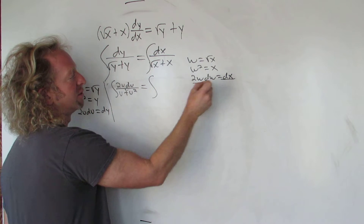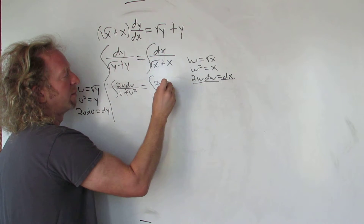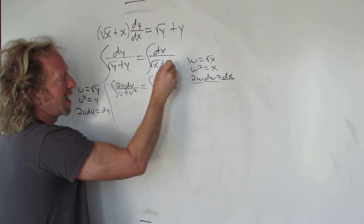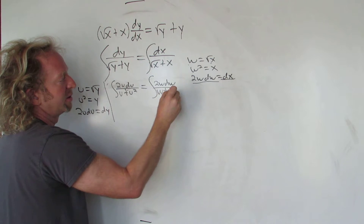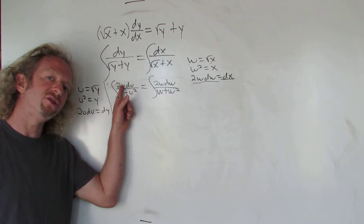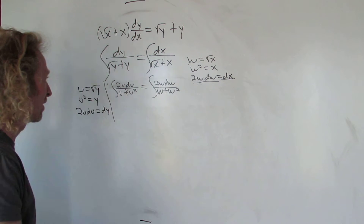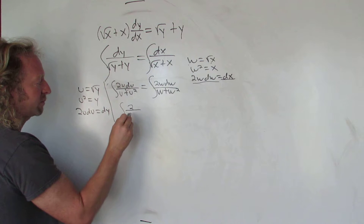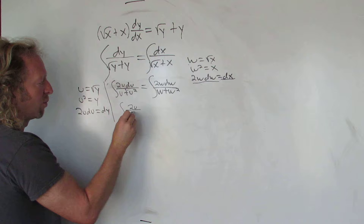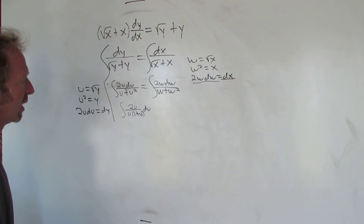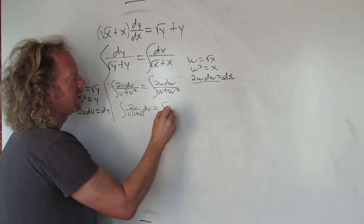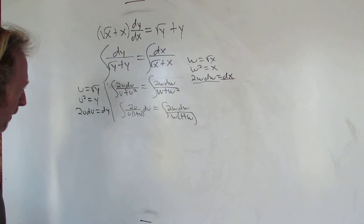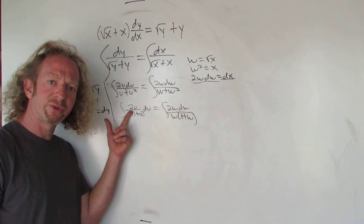So over here, dx is 2w dw. And the square root of x equals w, so we have w plus w squared in the denominator. At this point you'll notice that you can pull out a u and cancel the u's. Likewise, you can pull out a w and cancel the w's. So we get 2 over (1 + u) du, and then the same thing: 2 over (1 + w) dw.